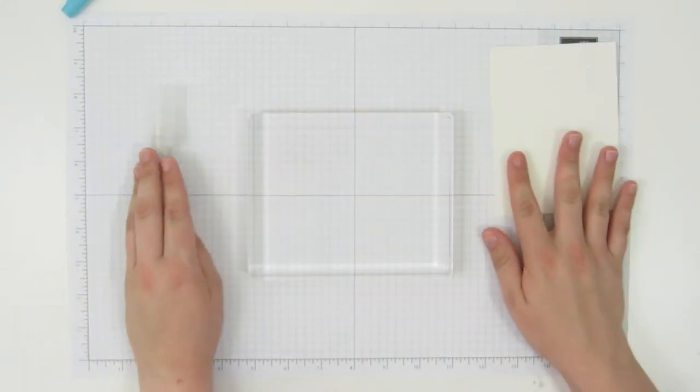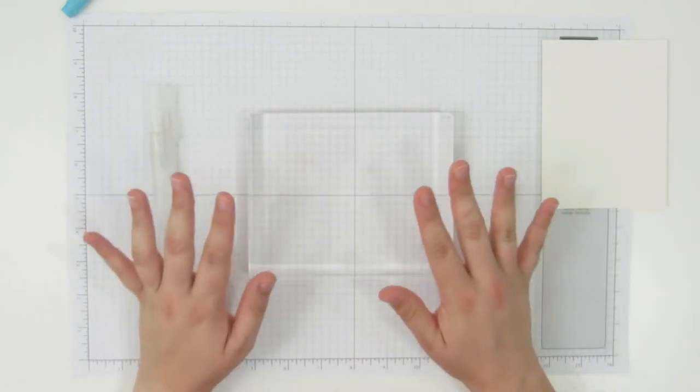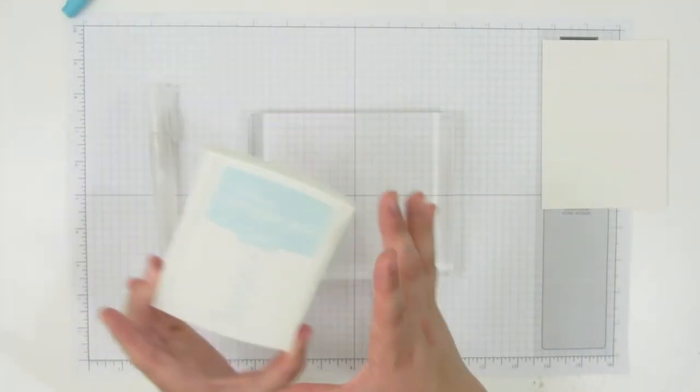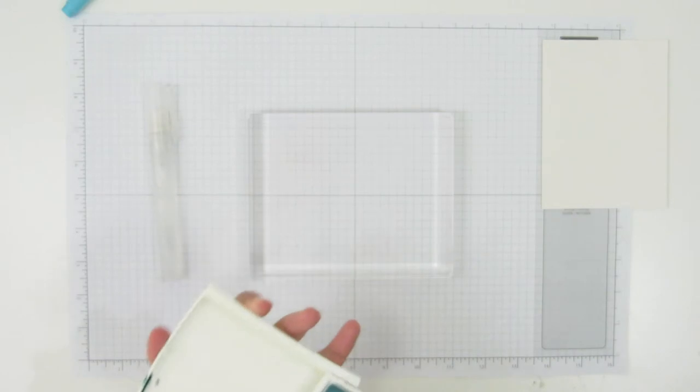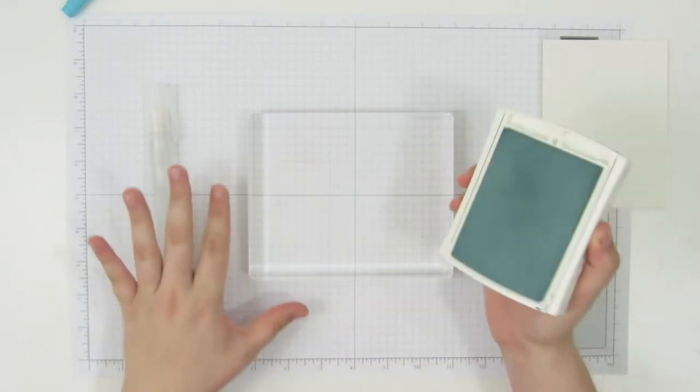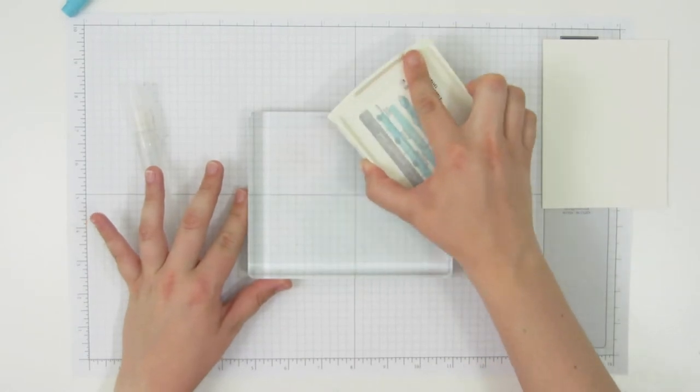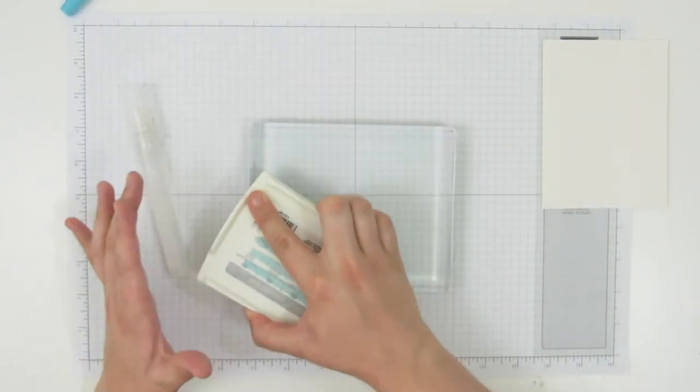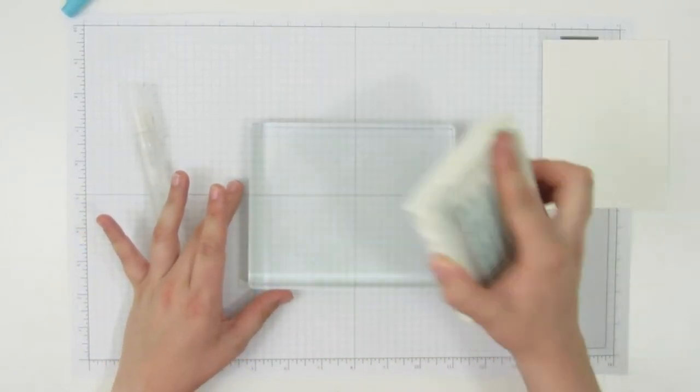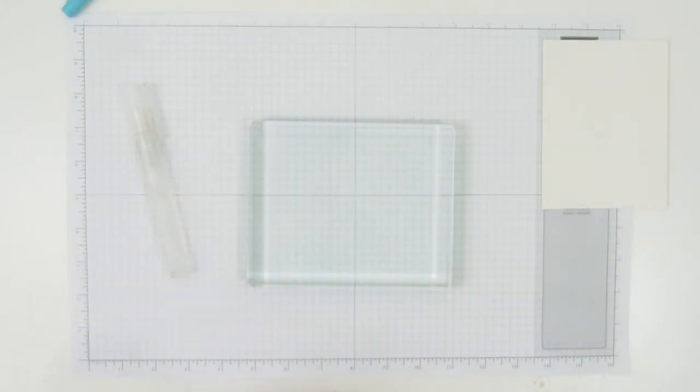So the first thing I'm going to do, because I want to get kind of a base down, I'm going to be using my soft sky ink pad to ink up my clear block here. It doesn't really matter how much ink I put on there as long as I get some on.